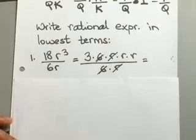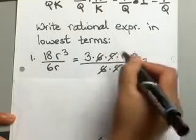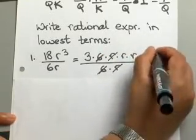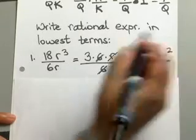Now, once we cancel out all the common expressions, let's see what are we left with. You have 3rr on your numerator, so that's your 3r square.